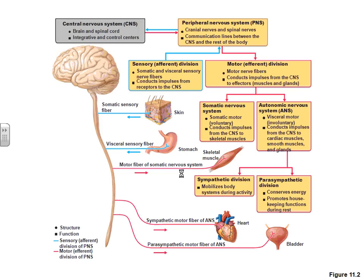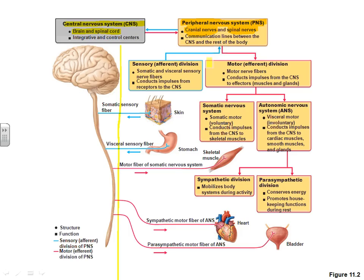We're going to divide our nervous system into the central nervous system and the peripheral nervous system. Your central nervous system is just made of your brain and spinal cord. Everything else in your body is part of the peripheral nervous system. Your central nervous system has many extensions called nerves, and those nerves are what make up your peripheral nervous system. You have cranial nerves coming out of your brain directly and spinal nerves coming out of your spine.